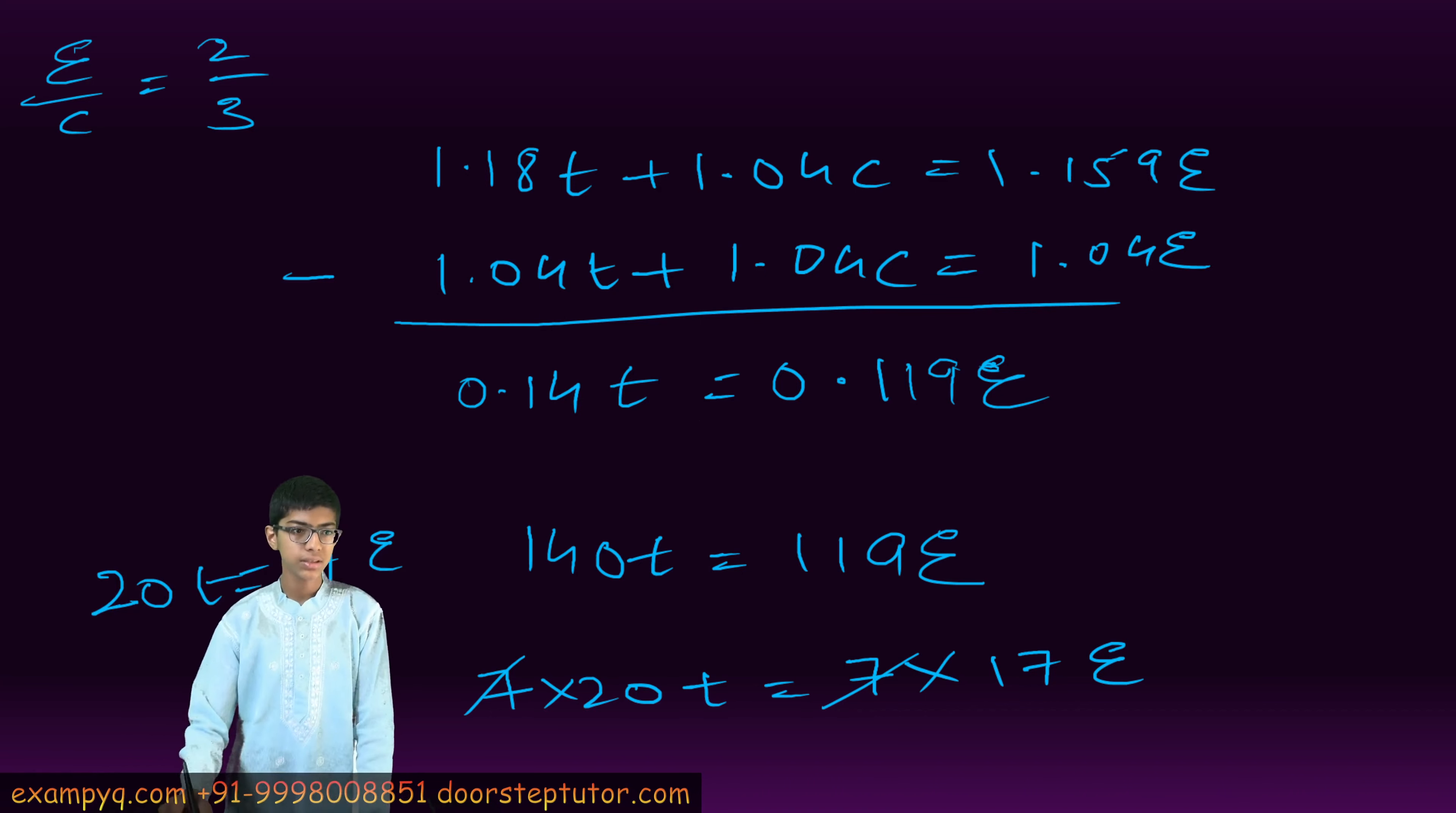Now, the ratio between E and C was 2 by 3. Now we will take the ratio between T and E.